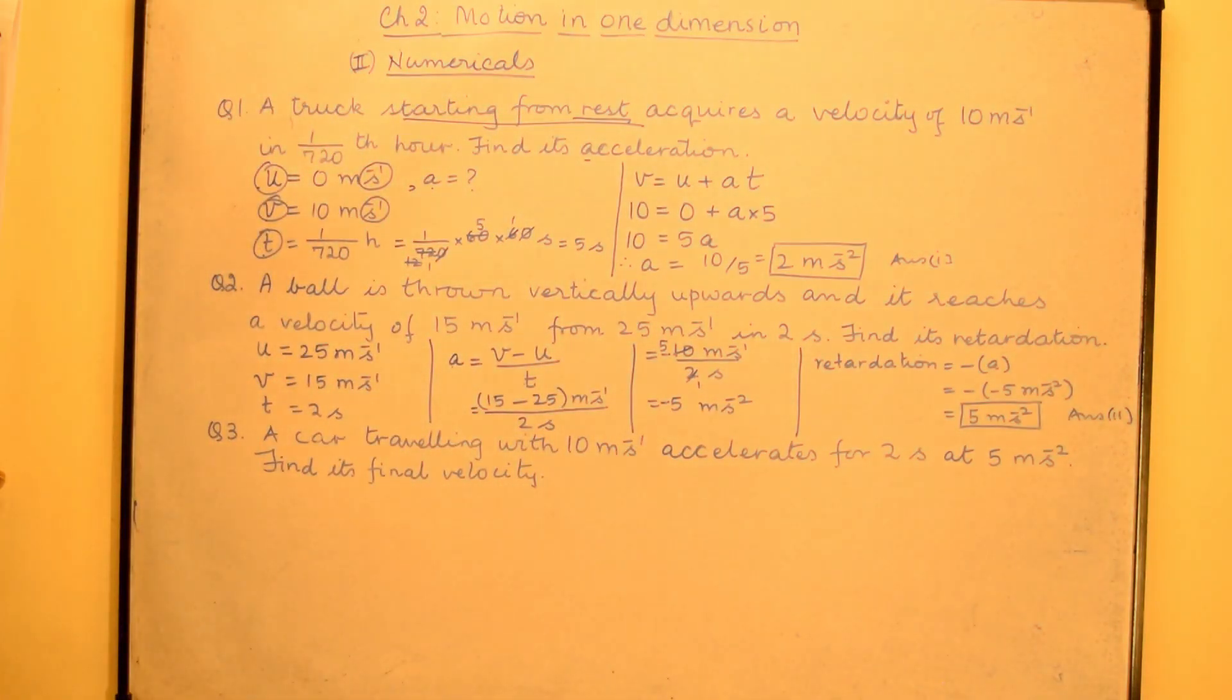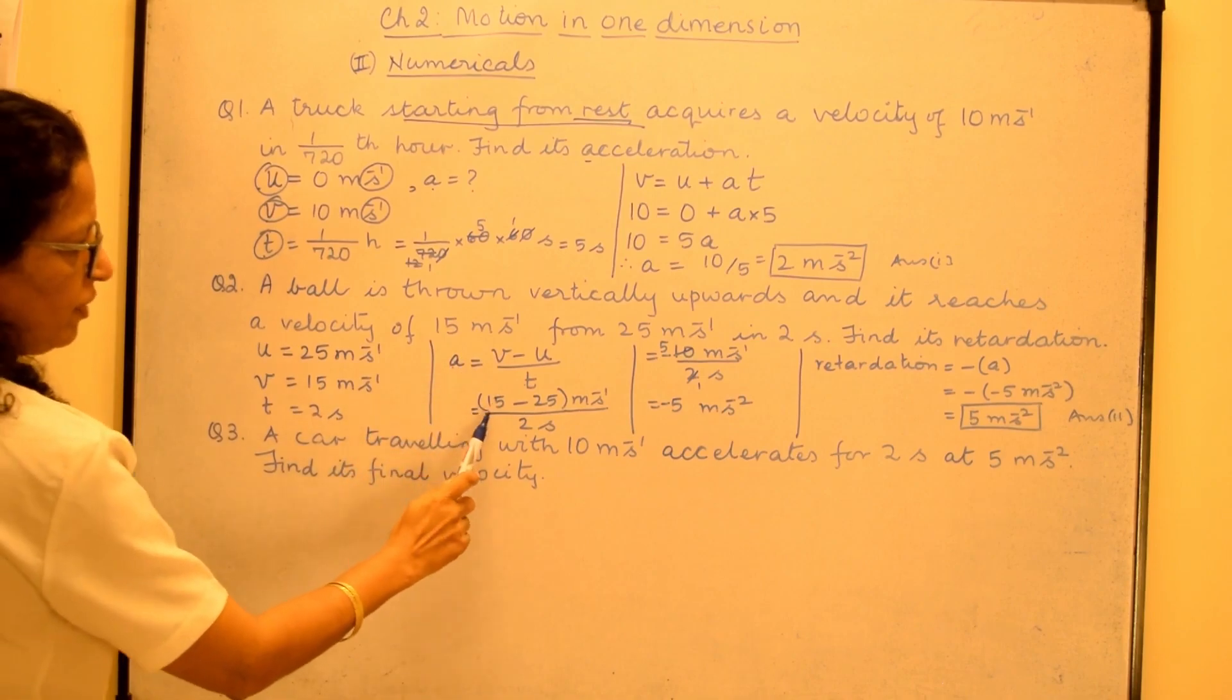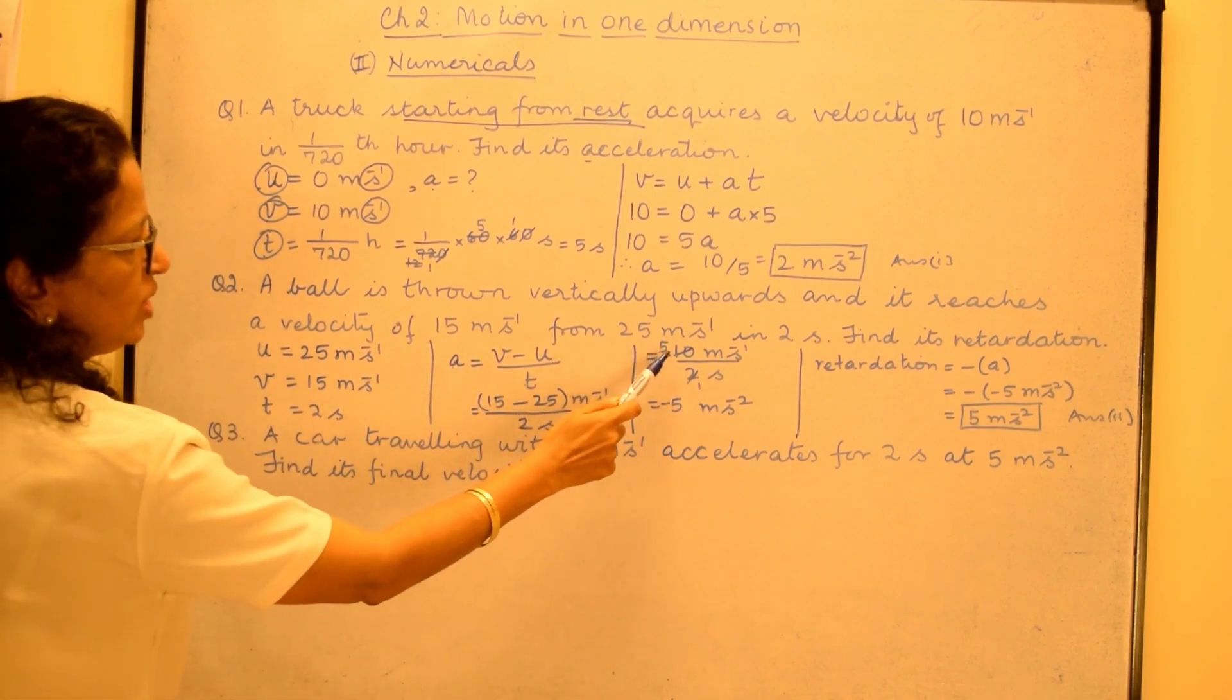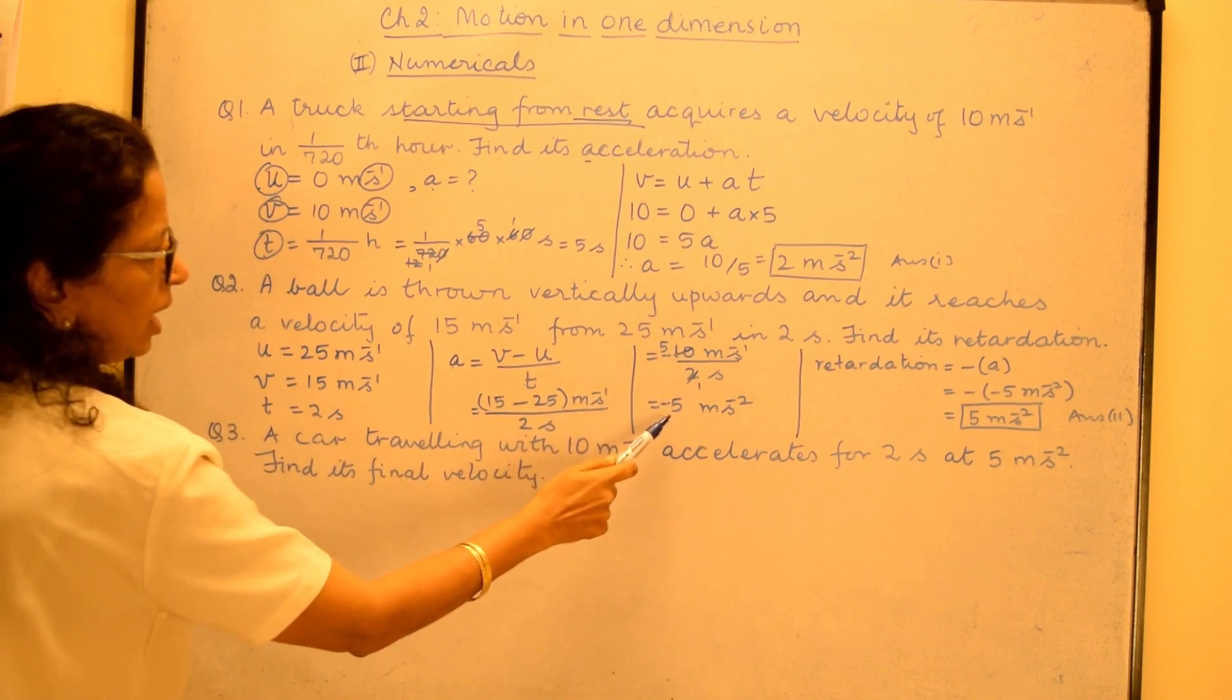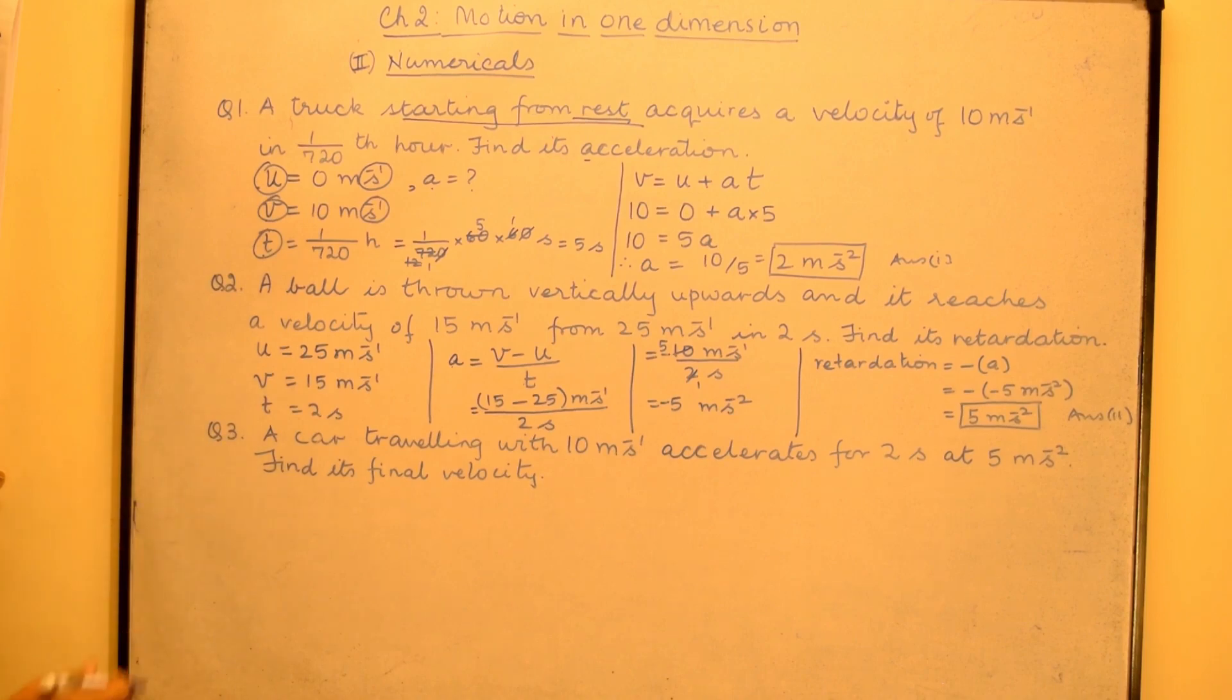Now when we came over here 15 minus 25, we could write minus 25 immediately over here minus 10. And we could get here minus 5 immediately. Let us come to question number 3.